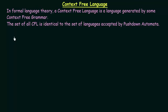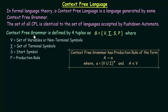Now let us see how context free grammars are formally defined. A context free grammar is defined by a four-tuple as G = (V, Σ, S, P). Regular grammar was also defined using four tuples as (V, T, S, P). Context free grammar is similarly defined using four tuples (V, Σ, S, P), where V is the set of variables or non-terminal symbols, Σ is the set of terminal symbols, S is the start symbol, and P is the production rule.